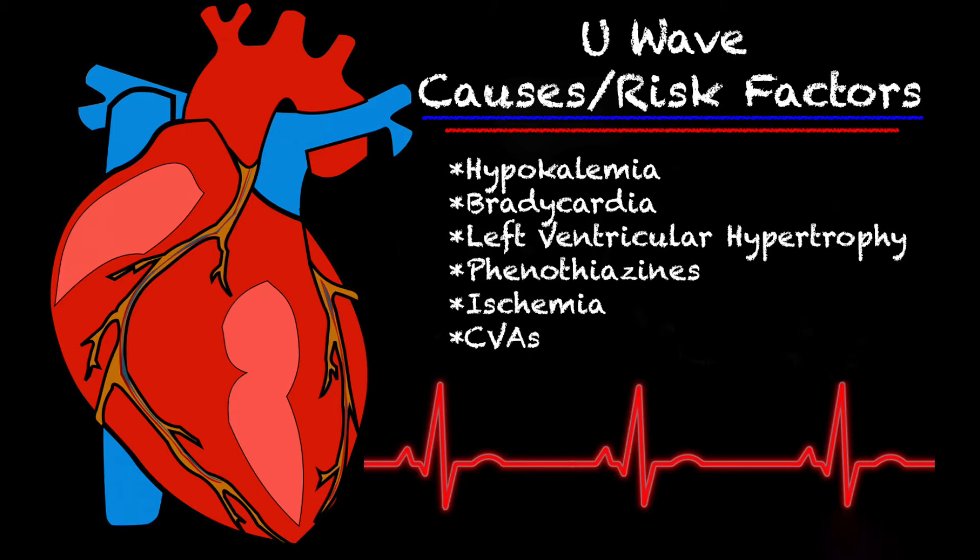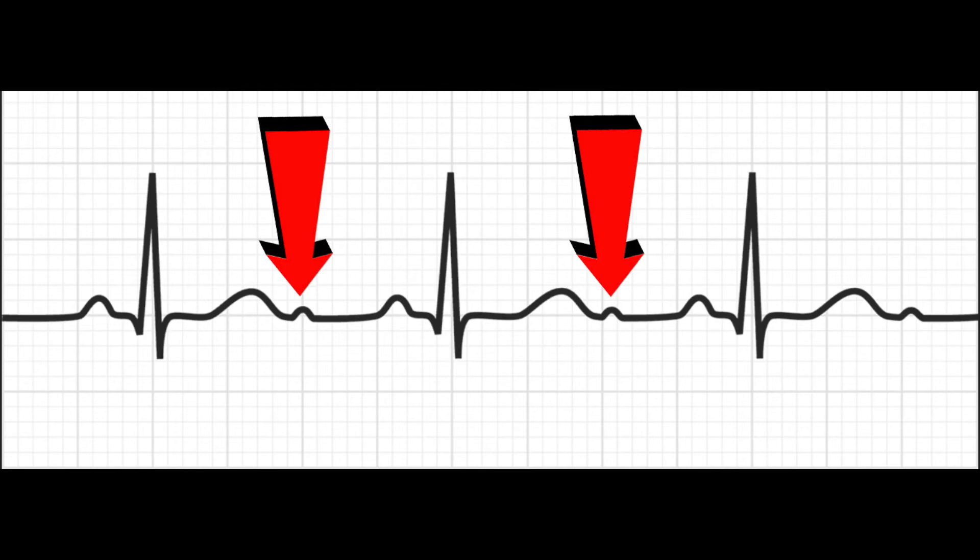Let's take a look at U-waves on a strip or on an EKG. This is a really clean illustration of a U-wave. You have your P-wave, your QRS complex, your T-wave, and then the U-wave — and you'll see how tiny that U-wave is.